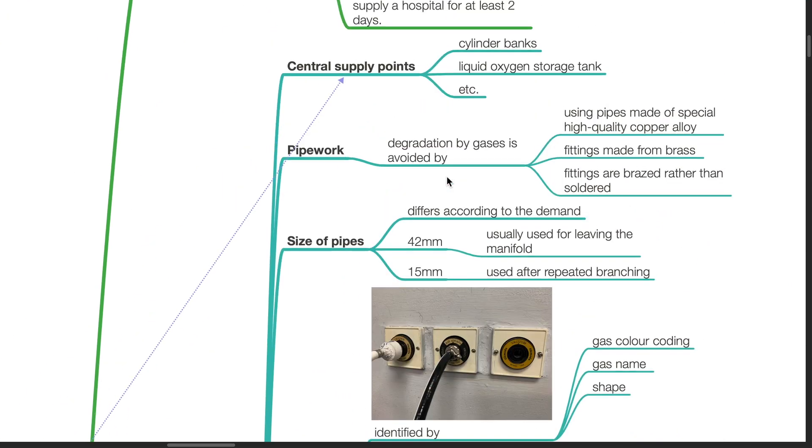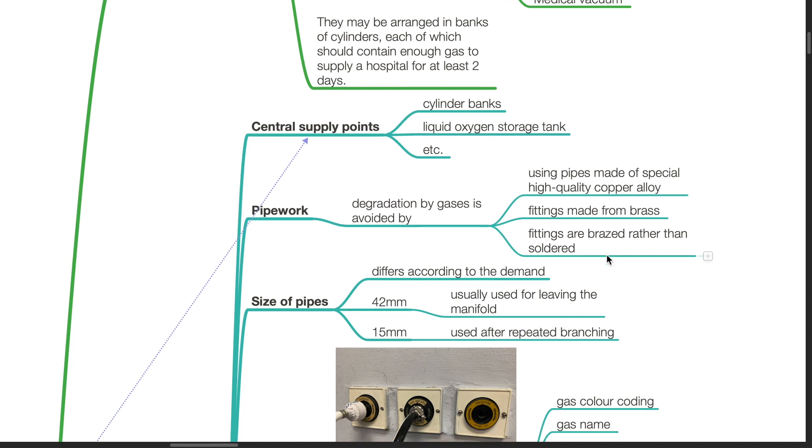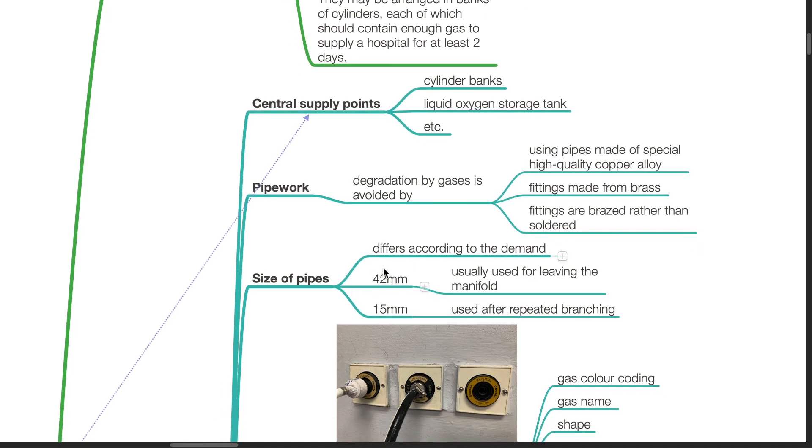Components: Central supply points such as cylinder banks, liquid oxygen storage tank, etc. Pipe work: Degradation by gases is avoided by using pipes made of special high quality copper alloy and fittings made from brass. Fittings are braced rather than soldered. The size of pipes differ according to demand. 42 mm is usually used for leaving the manifold, 15 mm is used after repeated branching.